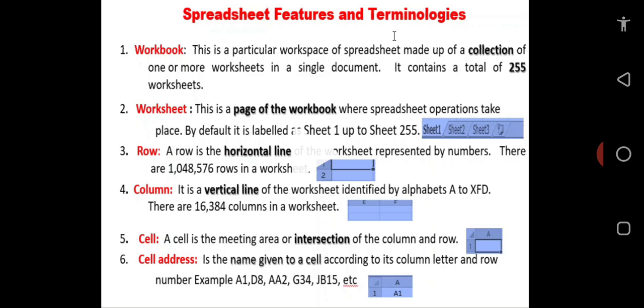Number two, the worksheet. This is a page of the workbook, again a page of the workbook where spreadsheet operations take place. By default, it is labeled as sheet 1 and runs up to sheet 255 as you can see on the screen clip.